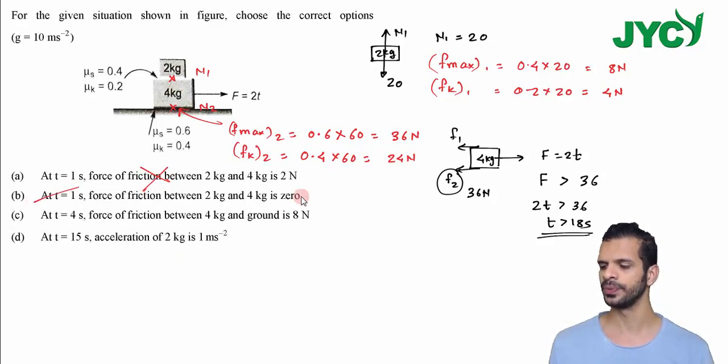My second option is correct which is 0. At time equal to 4 seconds, the force of friction between 4 kg and ground, here my force is 8 Newton. At time equal to 4 seconds it is 8 Newton force. The maximum value of this friction is 36 Newton, so this is my F max which is 36, so this 4 kg doesn't move. If this doesn't move then the value of friction is going to be 8 Newton because it's going to be static friction, where static friction is variable friction. So here the friction between 4 kg and ground will be 8 Newton, so my option C is also correct.